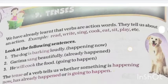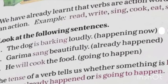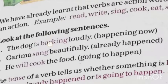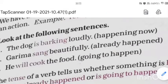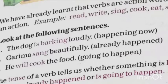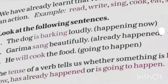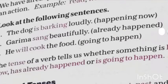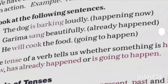For example, if you are saying 'the dog is barking loudly,' 'is' shows that the action is happening now. Whereas when we say 'Garima sang beautifully,' 'sang' is past, which depicts that the action has already happened. The third sentence, 'he will cook the food,' 'will cook' reflects the future tense — the thing that is going to happen in the future.